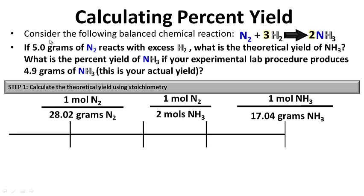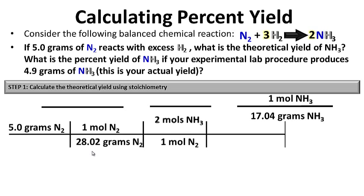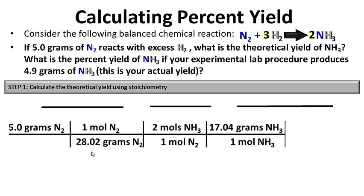Step one: calculate the theoretical yield using stoichiometry, starting with the limiting reactant. Start with 5 grams of N2. We know that 1 mole of N2 equals 28 grams of N2. According to the balanced chemical reaction, 1 mole of N2 will produce 2 moles of NH3. Finally, 1 mole of NH3 has a molar mass of 17.04 grams of NH3. Units cancel, giving us 6.08 grams of NH3 — our theoretical yield.